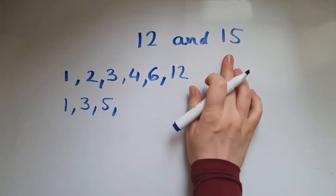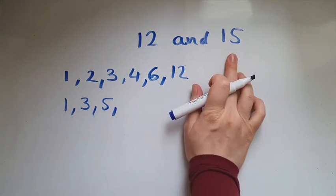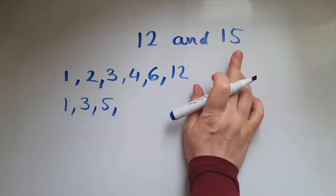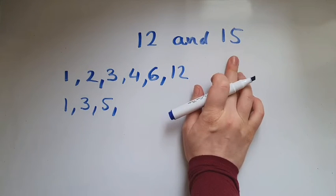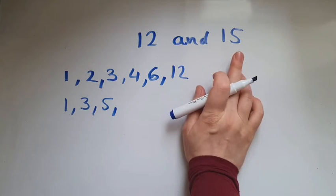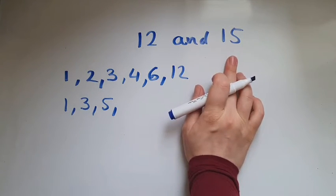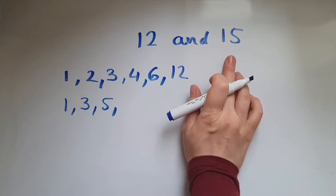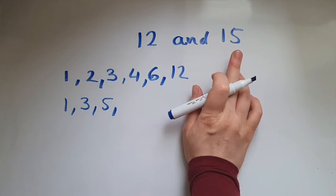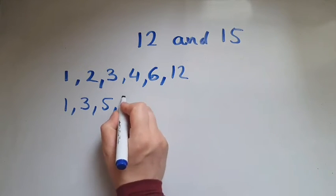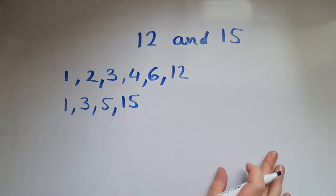6 is not. 7 is not. 8 is not. 9 is not. 10 is not. 11 is not. 12 is not. 13 is not. 14 is not. But 15 is. So the factors of 15 are: 1, 3, 5, and 15.